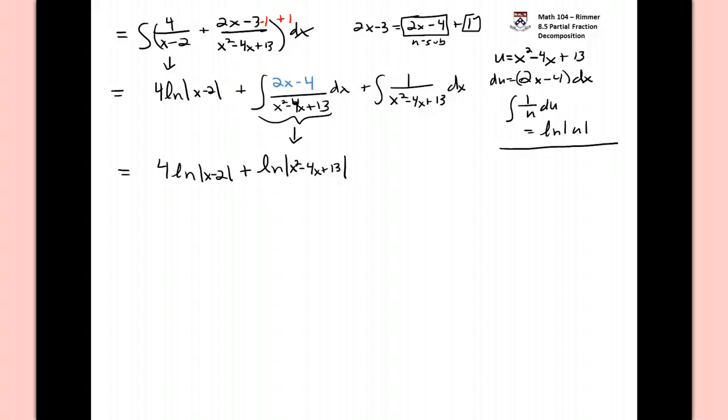And we have this guy here from before, 4 times the natural log of the absolute value of x minus 2. Now let's deal with the very last integral here. It's more trouble than it should be. If it was a nice perfect square we'd actually be in good shape, and so we need to make that happen. We actually have to complete the square to make it happen. Let's take x squared minus 4x plus 13 and let's add something to create a perfect square. But what we need to do to balance that out is take away that same thing.